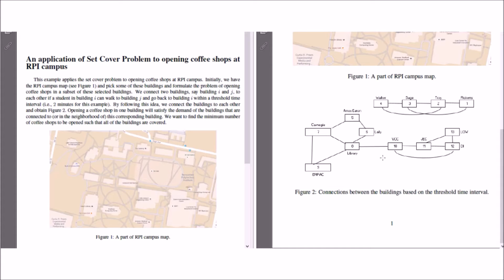The two-minute idea is represented in the map: Ricketts to Troy takes 30 seconds to one minute to walk and come back, so it is less than two minutes — our threshold — meaning Ricketts is connected to Troy. Similarly, Troy is connected to Ricketts, so there's a two-way connection. For Sage and Troy, I can go from Troy to Sage and come back in two minutes, so they are connected both ways. We have these connection sets for all the buildings in the map.